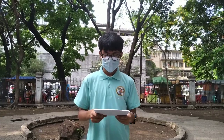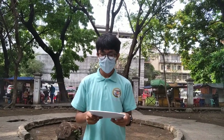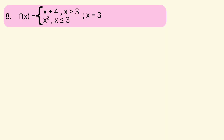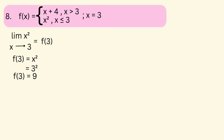For item number 8, f(x) = x + 4 if x > 3, and x² if x ≤ 3, evaluated at x = 3. Since x = 3 satisfies f(x) = x² for x ≤ 3, we substitute 3: f(3) = 3² = 9.